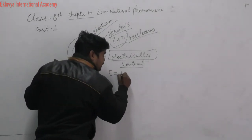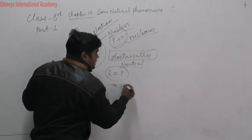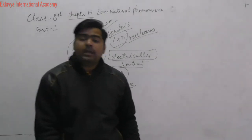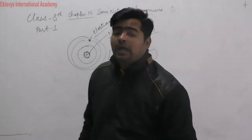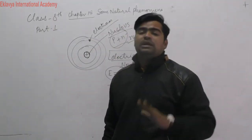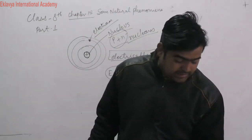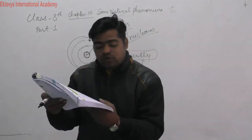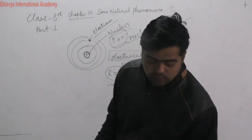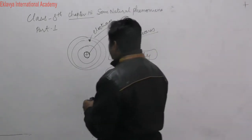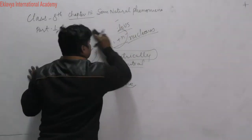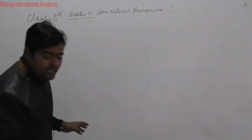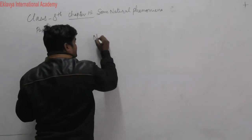An atom is electrically neutral because the number of electrons is always equal to the number of protons — that is, the negative charge particles are equal to the positively charged particles. That is why the atom is electrically neutral. If the number of protons exceeds electrons, the atom acquires a positive charge.